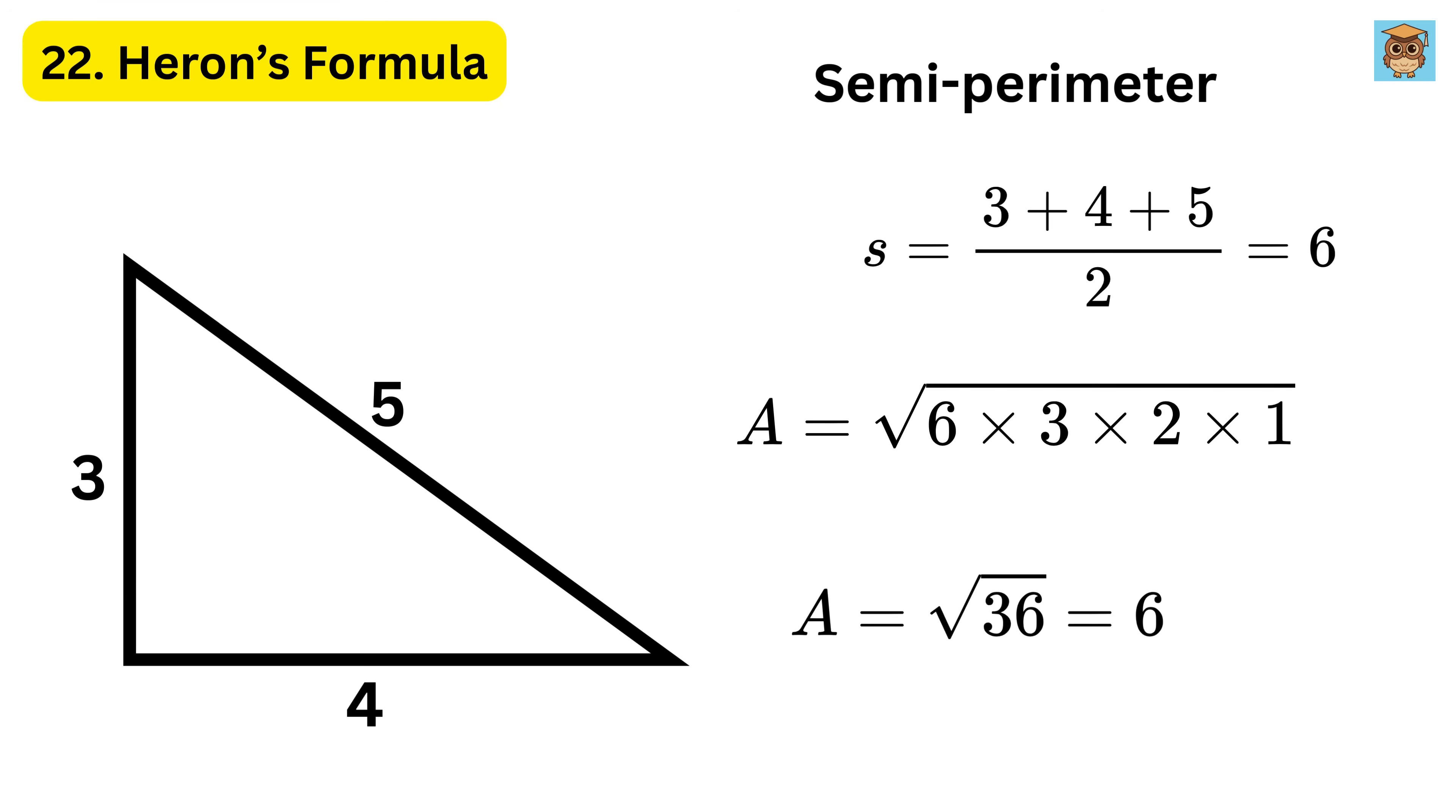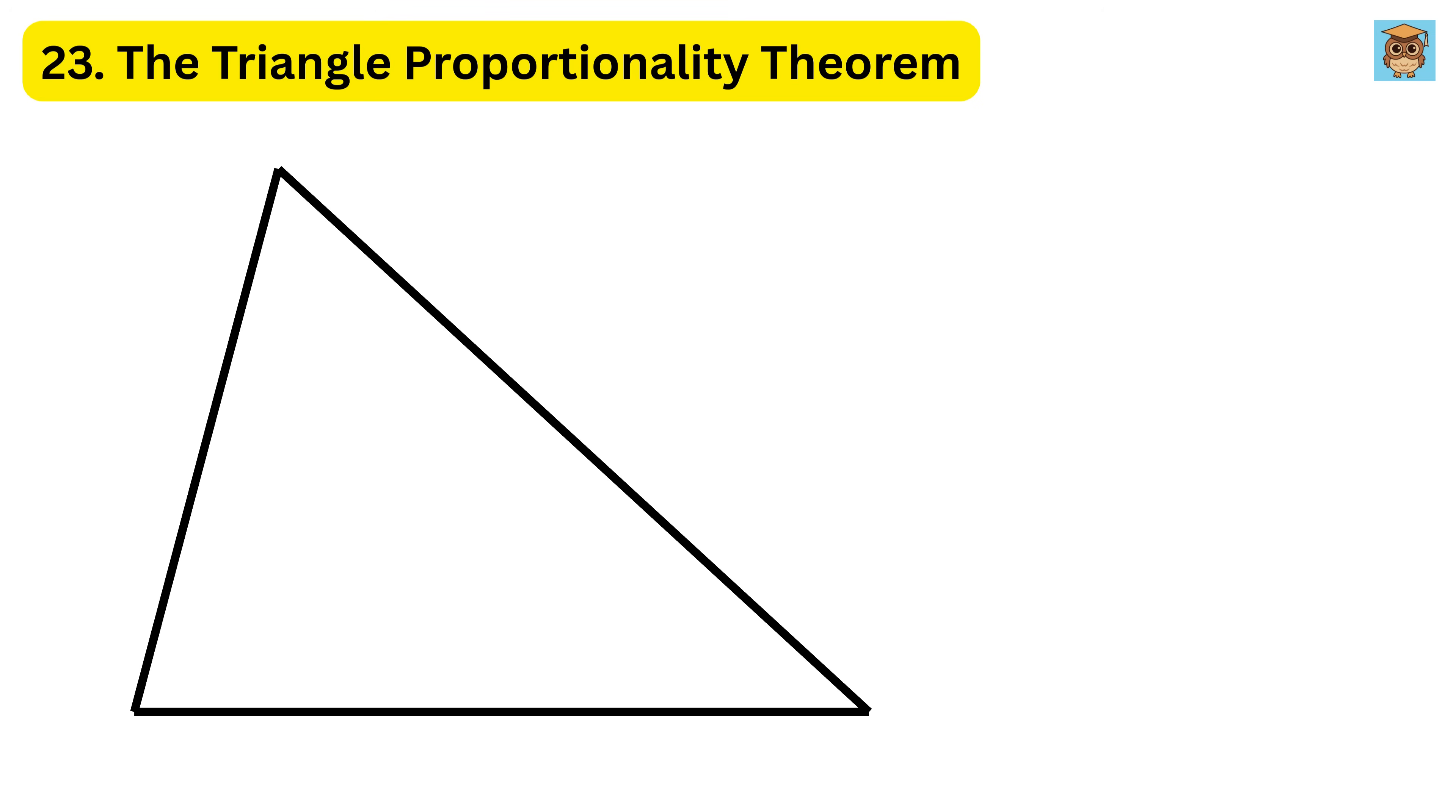This method is especially useful when the height of the triangle is unknown. 23. The triangle proportionality theorem states that if a line parallel to one side of a triangle cuts through the other two sides, it divides them in the same ratio. This means the segments created on both sides will be proportional.